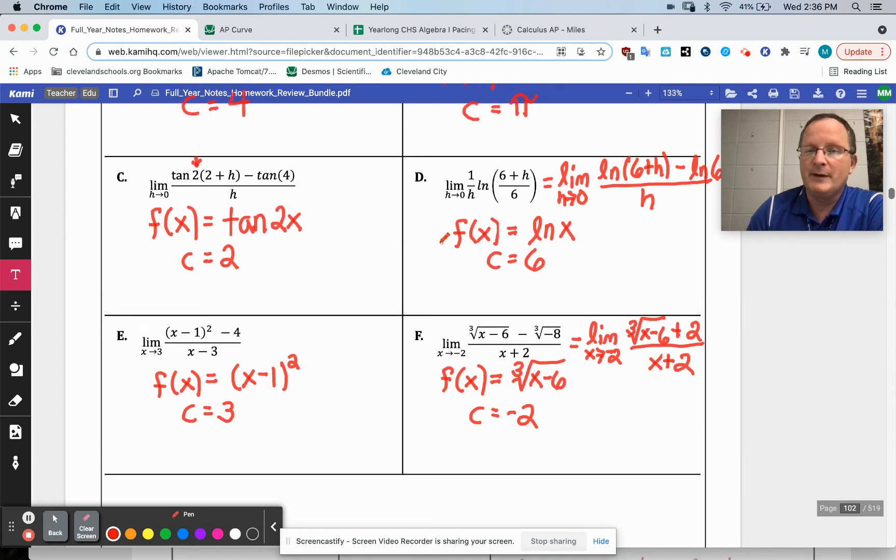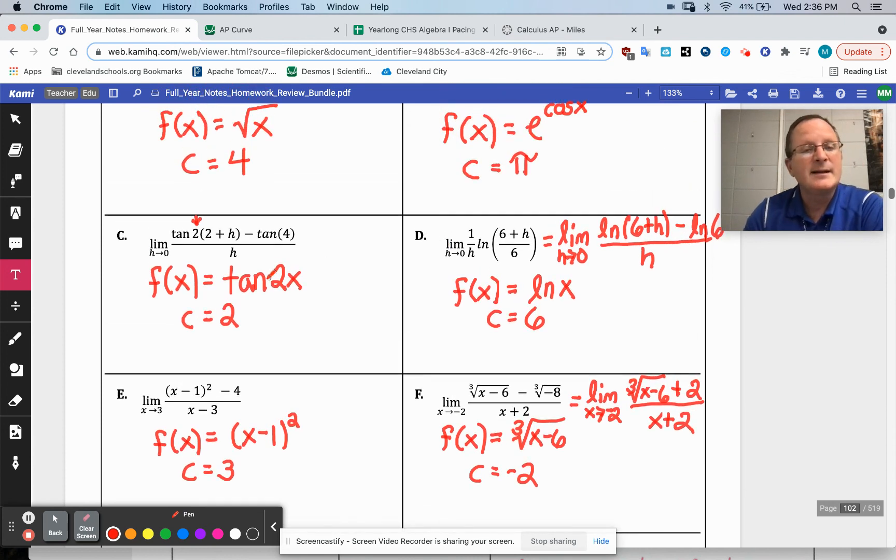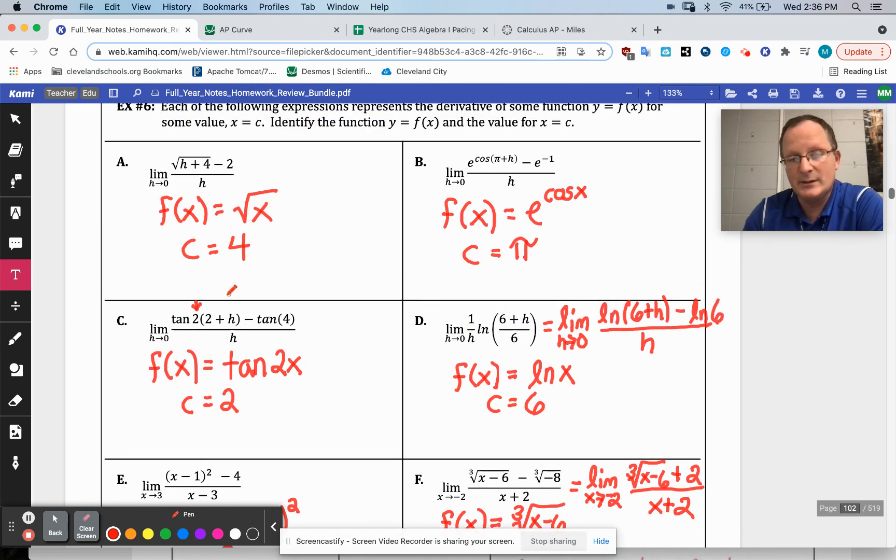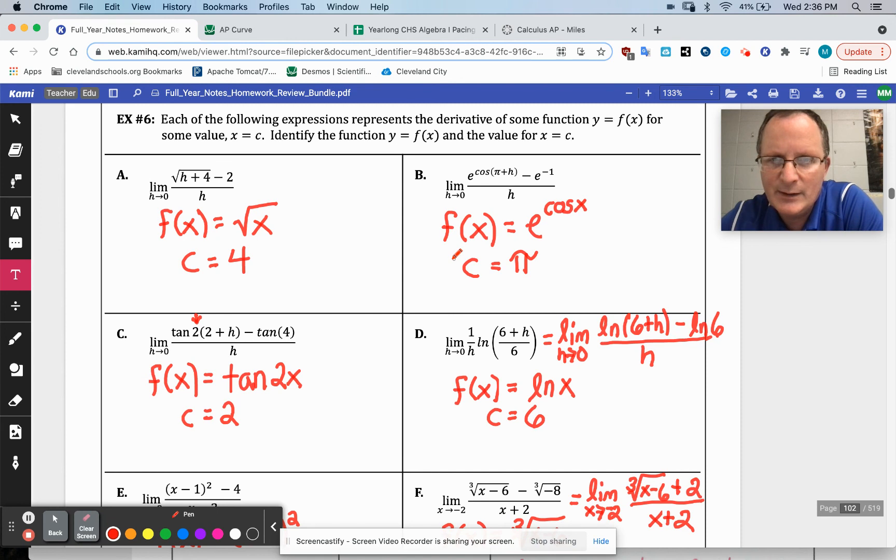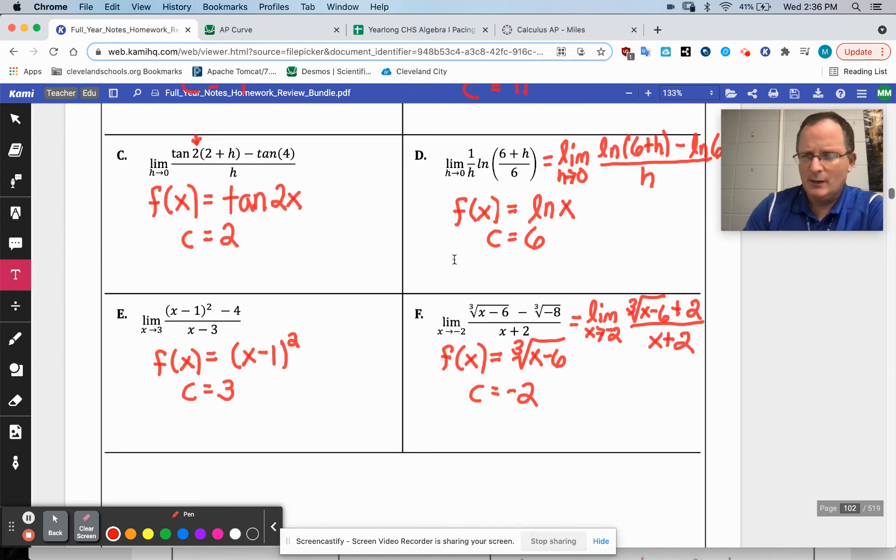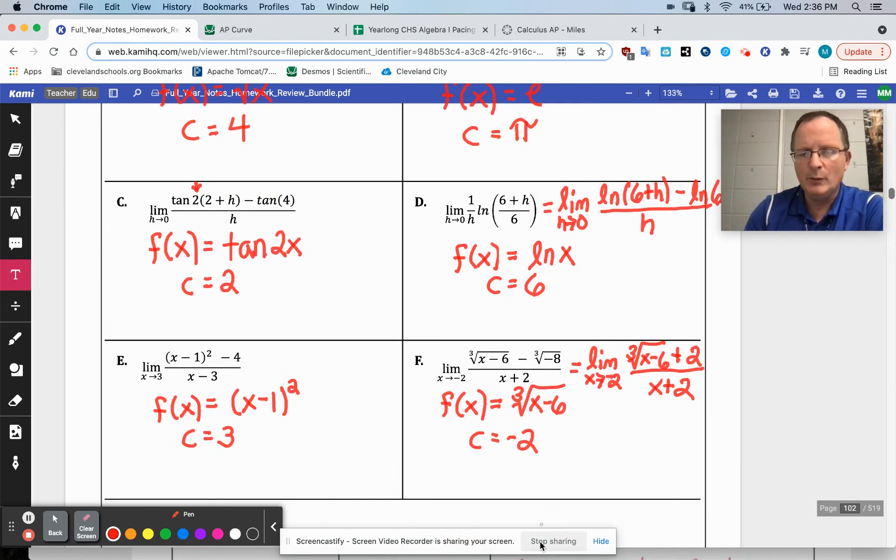This is finding the derivative of x minus 1 squared when x is 3. And all the rest too. This up here is the derivative of the natural log of x when x is 6. The derivative of tangent 2x when x is 2. So on and so forth. All right, so that's what all of these are. You're just finding the derivative. And they already had substituted in and started cleaning it up a little bit. Okay? Okay. I hope that helps. All right, we'll see you guys tomorrow.